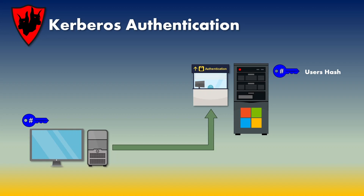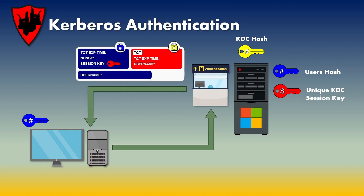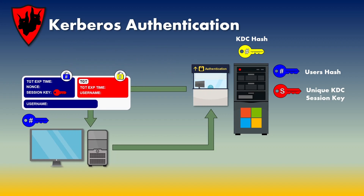If the timestamp cannot be decrypted then the authentication server sends an error message back to the client. If the authentication server is able to decrypt the message, it creates a unique KDC session key and then uses its own hash of the KDC password to create a ticket granting ticket. I would suggest you look at the ticket granting ticket as two individual messages to the client. The first part of the ticket is encrypted using the user's hash, whereas the second part — the TGT — is encrypted using the KDC's hash. The first message contains a unique session key for both the client and the server to use for any future communication. The second part of the ticket cannot be read by the client — it's what's sent in future stages of the Kerberos protocol. It's not for the client to read; it's for the client to forward on, which we'll show in the next stage.